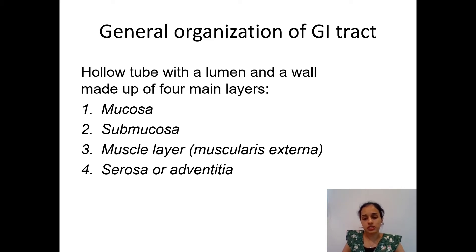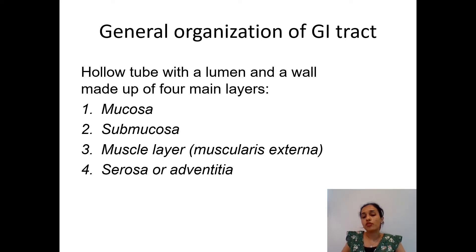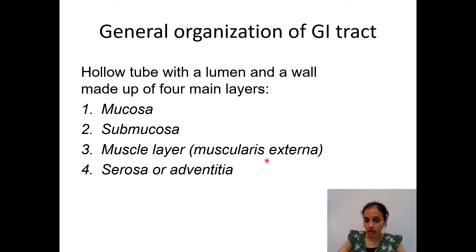The digestive system consists of the digestive tract, which extends from the oral cavity to the rectum and anus, and has accessory glands like salivary glands, pancreas, and liver. Here I'll be focusing mainly on the GI tract. The digestive tract is a hollow tube with a lumen and a wall made up of four main layers: the mucosa, submucosa, muscularis externa, and serosa or adventitia.